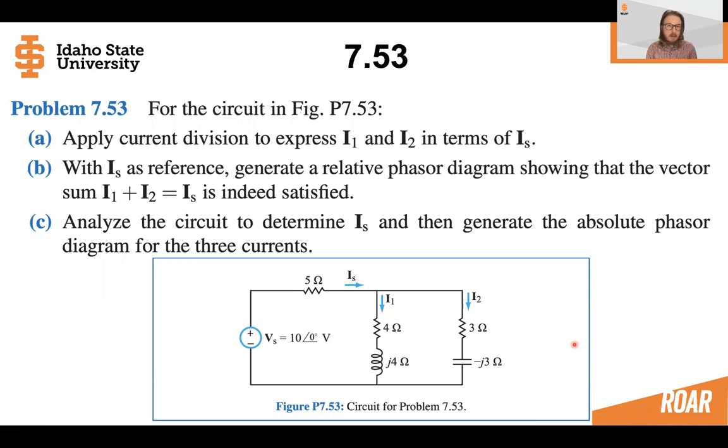The first part is to apply current division. We'll apply current division the same thing that we did in the DC problems, except we'll use phasors since this is an AC problem. Then we will draw a phasor diagram using IS as a reference. This will be a relative phasor diagram.